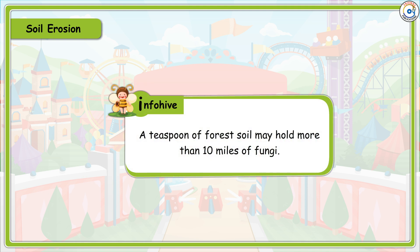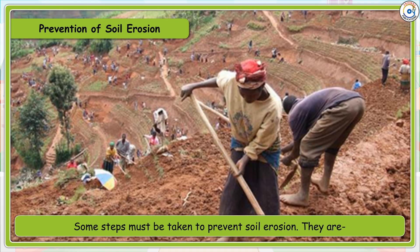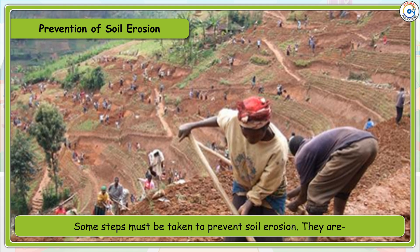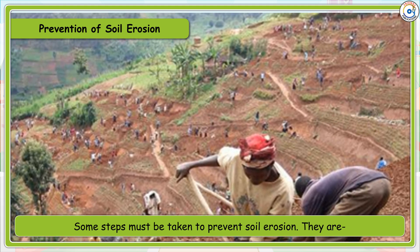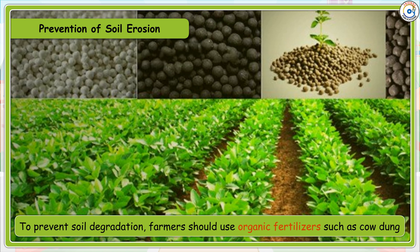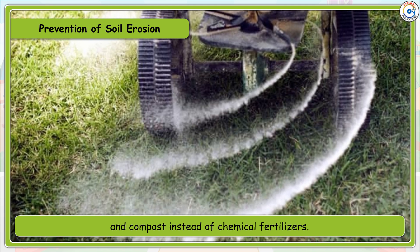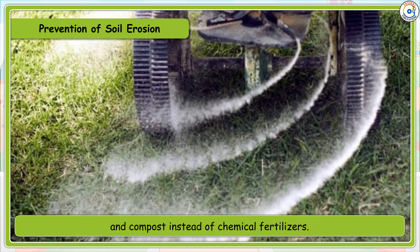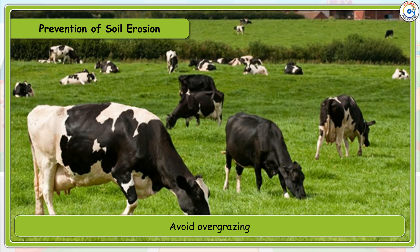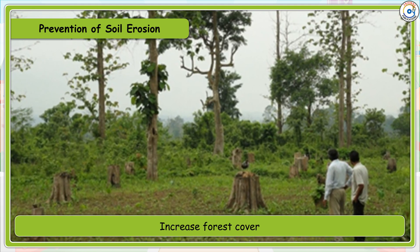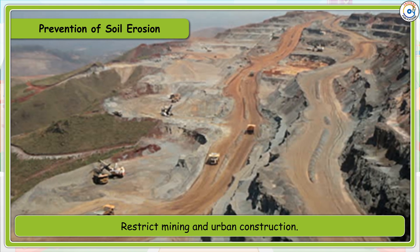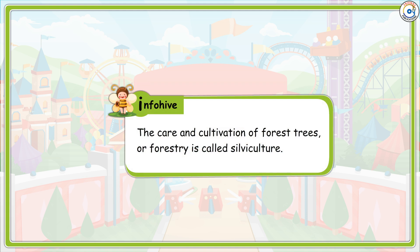A teaspoon of forest soil may hold more than 10 miles of fungi. Some steps must be taken to prevent soil erosion. Farmers should use organic fertilizers such as cow dung and compost instead of chemical fertilizers. Other preventive measures include avoiding cutting down of trees, avoiding overgrazing, increasing forest cover, and placing restrictions on mining and urban construction. The care and cultivation of forests and trees is called silviculture.